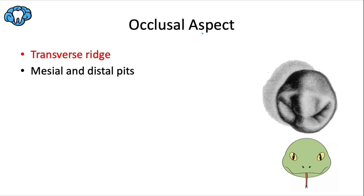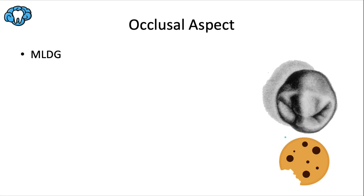We'll spend more time on the occlusal aspect, as we tend to do with posterior teeth, because there's a lot more interesting stuff going on. This is the only premolar that has a uniquely prominent transverse ridge, where the two triangular ridges collide at the middle of the tooth. This results in two very separate mesial and distal pits, sometimes referred to as 'snake eyes' — hence the cute cartoon.